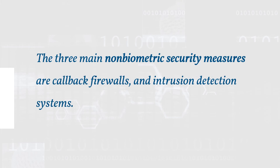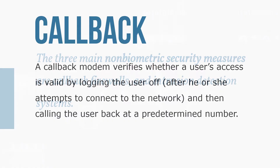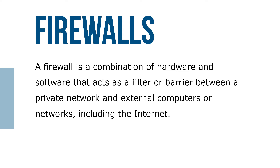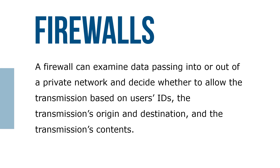The three main non-biometric security measures are callback, firewalls, and intrusion detection systems. A callback modem verifies whether a user's access is valid by logging the user off after they attempt to connect to the network and then calling the user back at a predetermined number. A firewall is a combination of hardware and software that acts as a filter or barrier between a private network and external computers or networks, including the internet. A firewall can examine data passing into or out of a private network and decide whether to allow the transmission based on the user's ID, the transmission's origin and destination, and the transmission content.